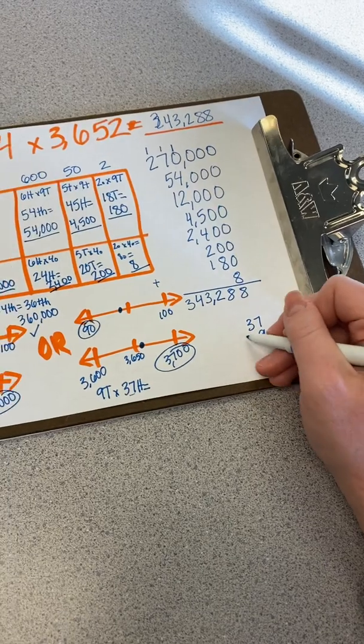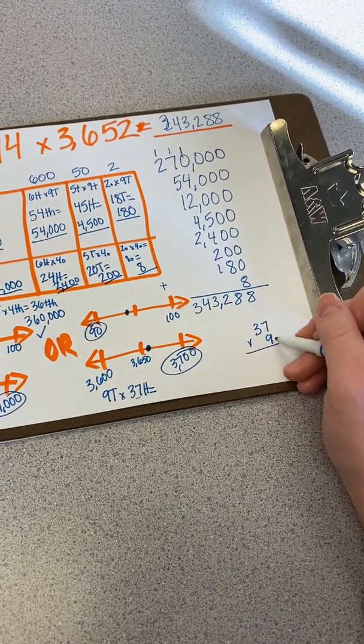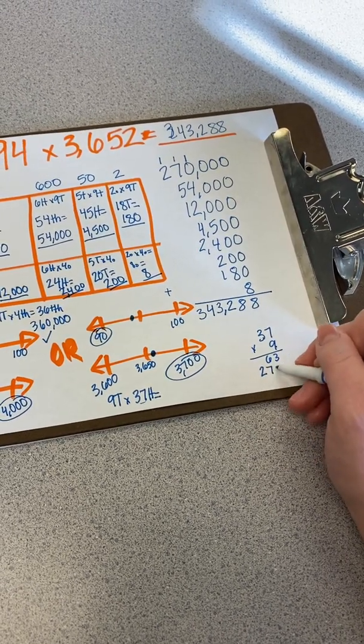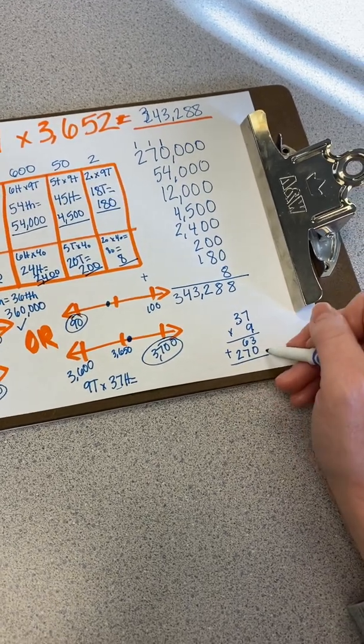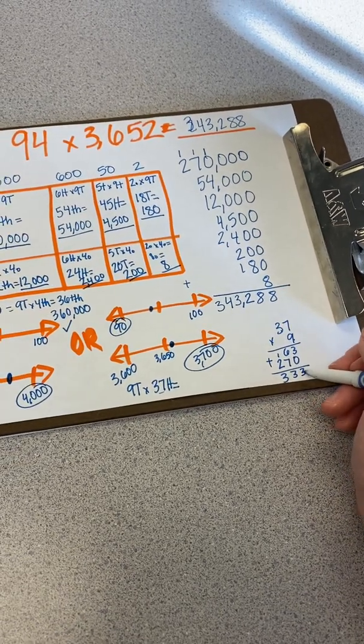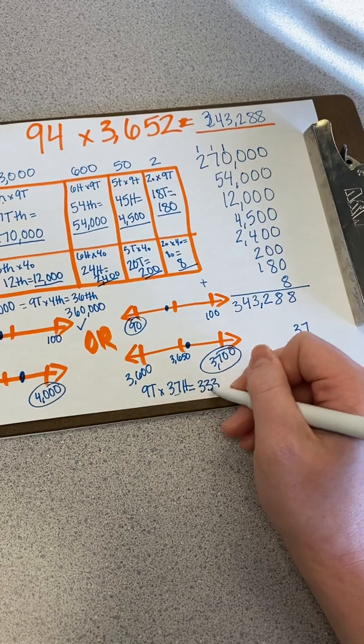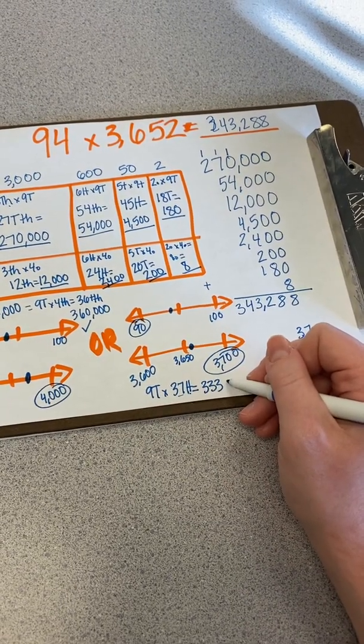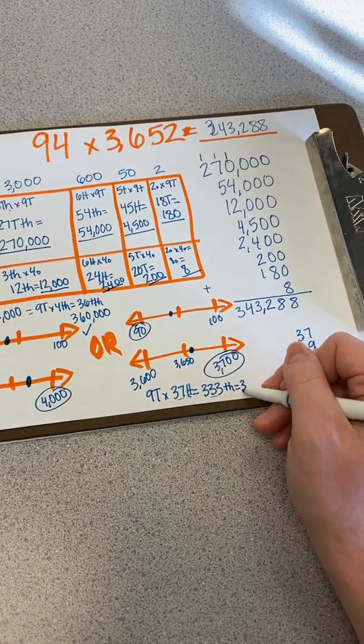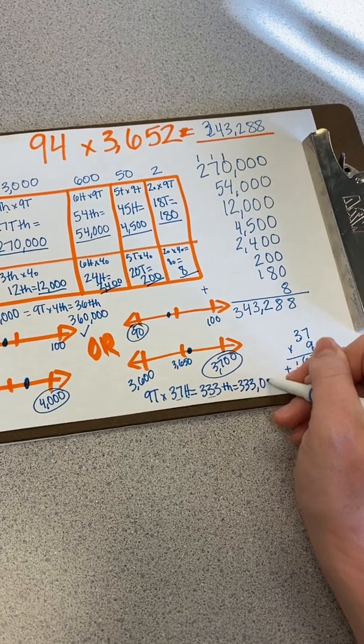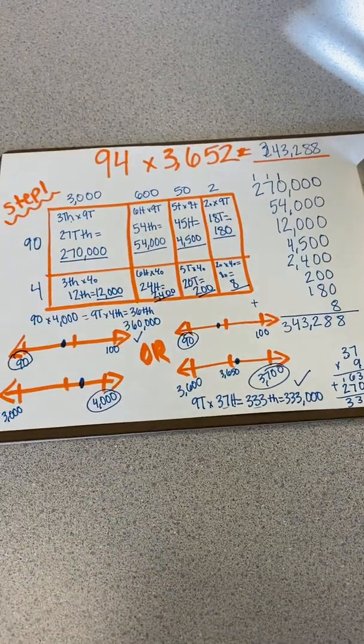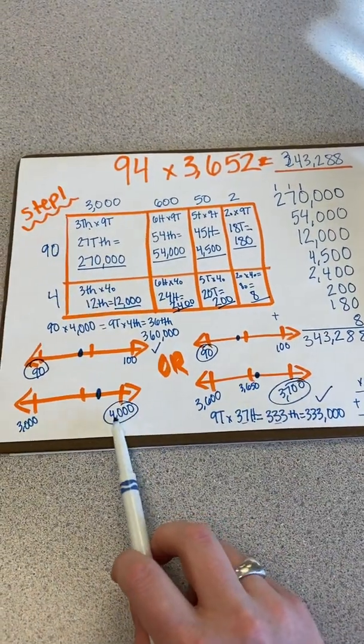So I'll do 9 tens times 3,700. And I didn't know what 37 times 9 was, so I'm going to do a quick fact check over here. 9 times 7 is 63. 9 times 3 is 27, but I have 3 tens, so I need 27 tens, which has a value of 270. And so when I add all of that, that gives me 333 thousands, which is also very close to my actual answer. So that is another way that I can estimate is by rounding to the nearest hundred versus rounding to the greatest place value.